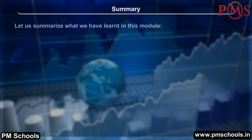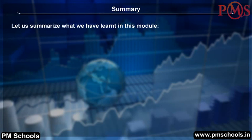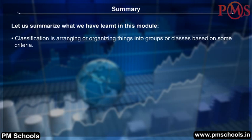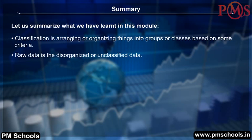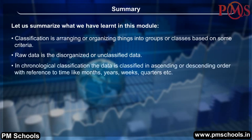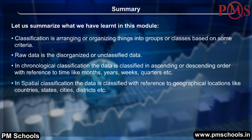Summary: Classification is arranging or organizing things into groups or classes based on some criteria. Raw data is disorganized or unclassified data. In chronological classification, data is classified in ascending or descending order with reference to time — like months, years, weeks, quarters, etc. In spatial classification, data is classified with reference to geographical locations like countries, states, cities, districts, etc.